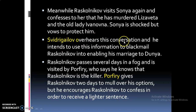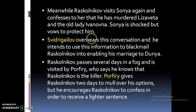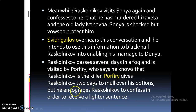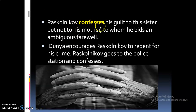Svidrigailov overhears this confession and intends to use the information to blackmail Raskolnikov into enabling his marriage to Dunya. Raskolnikov passes several days in a fog. Porfiry visits him and says he knows Raskolnikov is the killer, giving him two days to consider his options, but encourages him to confess in order to receive a lighter sentence. Raskolnikov confesses his guilt to his sister Dunya but not to his mother, to whom he bids an ambiguous farewell. Dunya encourages Raskolnikov to repent.